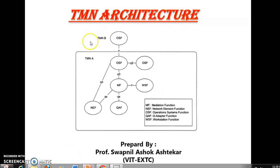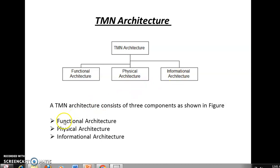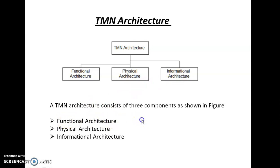Today we are going to focus on TMN Architecture. TMN Architecture consists of three types or three components: the Functional Architecture, the Physical Architecture, and the Informational Architecture. Whenever there is a question based on TMN Architecture, all three architectures are expected to be explained in the answer.